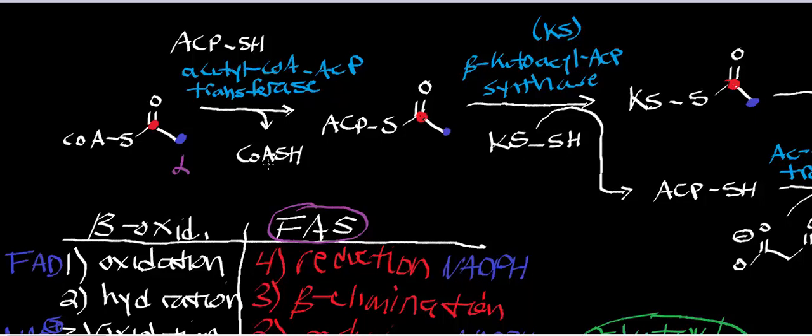Fatty acid synthase is an association of many different enzymes that together constitute the reverse reactions of beta-oxidation. The substrates are passed along from enzyme to enzyme — this is an example of substrate channeling. Each enzyme in the complex has a different activity.